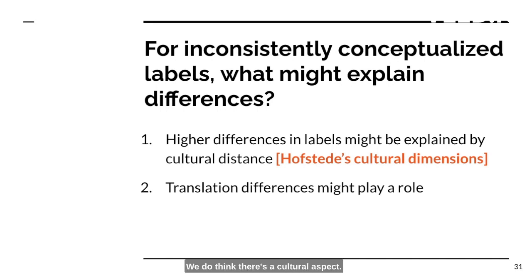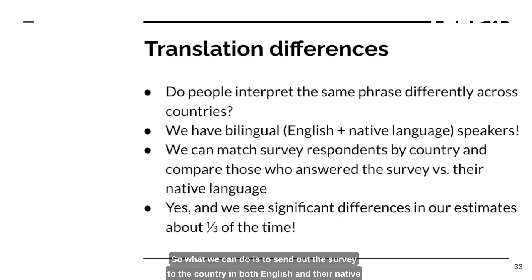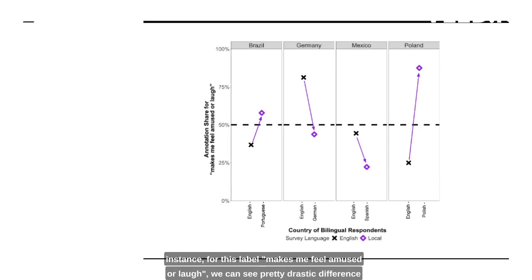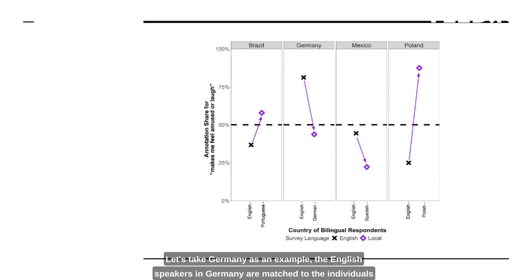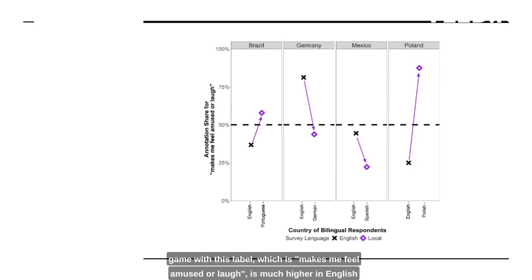The second aspect has to do with translational differences. We realized we have a lot of bilingual speakers in our sample. So we sent the survey to each country in both English and the native language, then matched those survey respondents to find the causal difference due to translation. It turns out we do see significant differences in our estimates about one third of the time. For instance, for the label 'makes me feel amused or laugh,' we see pretty drastic differences between English and native languages. Taking Germany as an example, English speakers in Germany were matched to individuals who took the survey in German, controlling for overall gaming experience, frequency of playing games in English, age, gender, and so on. After matching, the share who would annotate a game with that label is much higher in English than in German.